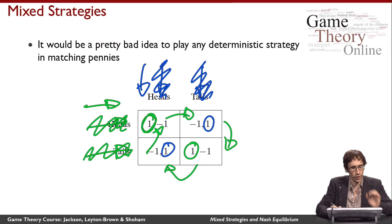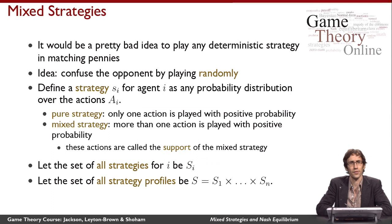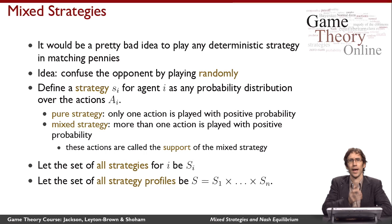So what does work for both players? It makes sense for players to confuse each other by choosing to play randomly. So intuitively, instead of committing to playing heads or tails, I can say I'm going to commit to flipping a coin and playing whatever side comes up.